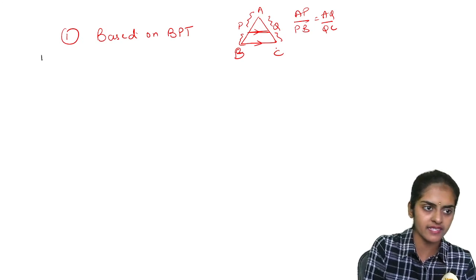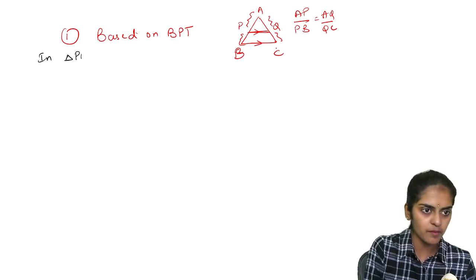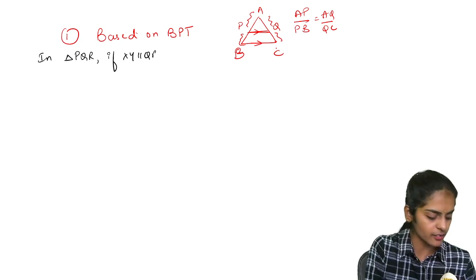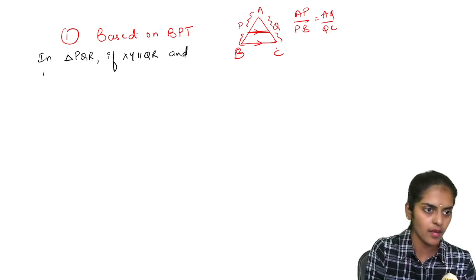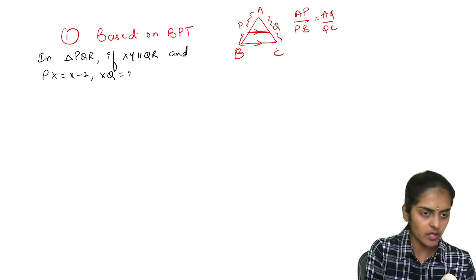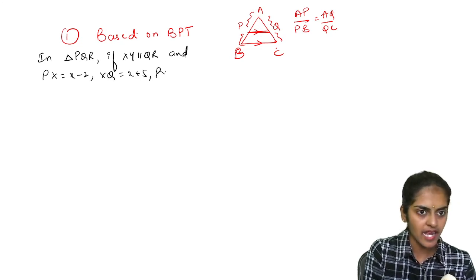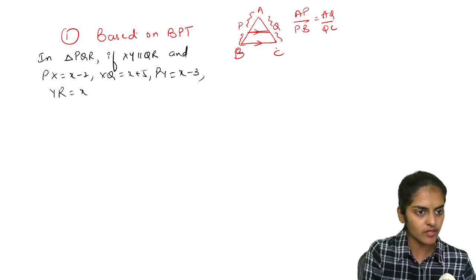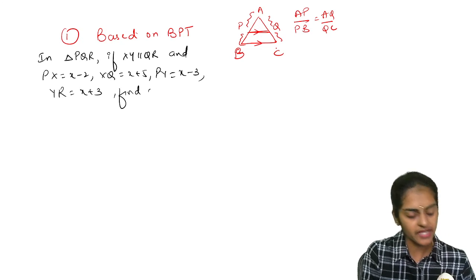For example, you may get a question like this. In triangle PQR, if XY is parallel to QR and PX = x minus 2, XQ = x plus 5, and PY = x minus 3 and YR = x plus 3, find x.